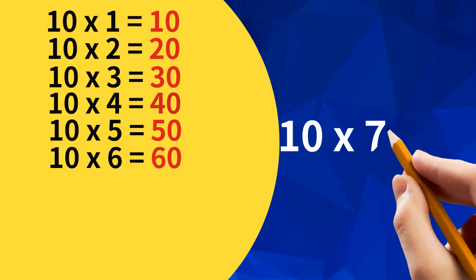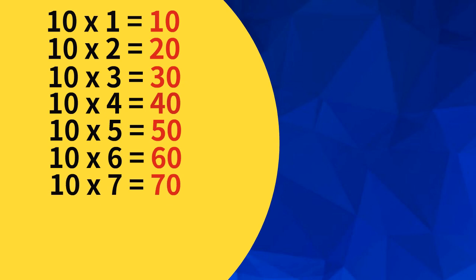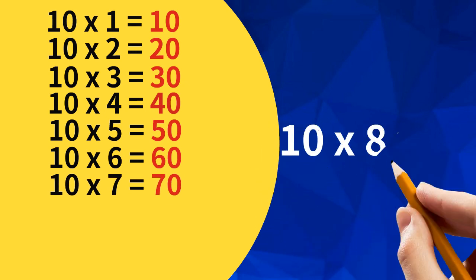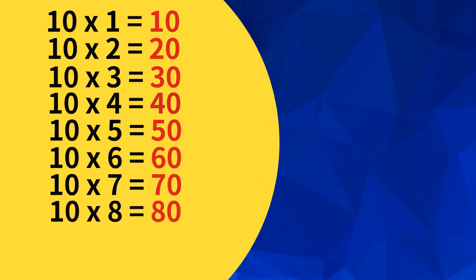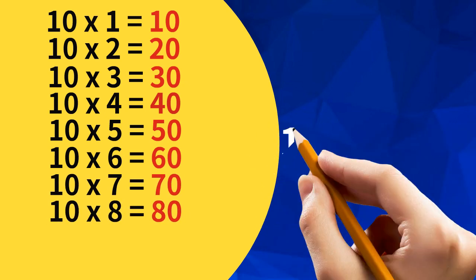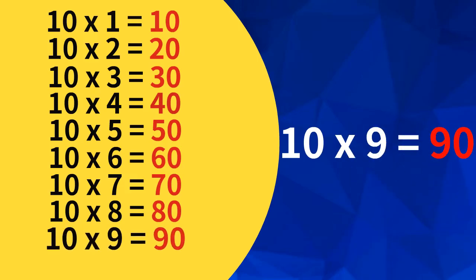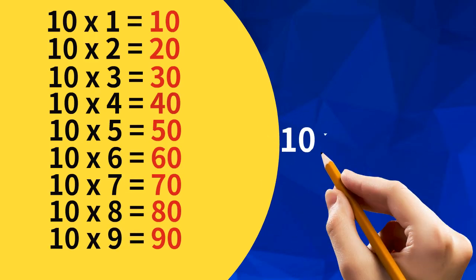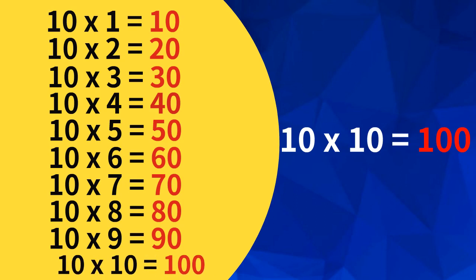Ten Sevens Are Seventy. Ten Eights Are Eighty. Ten Nines Are Ninety. Ten Tens Are Hundred.